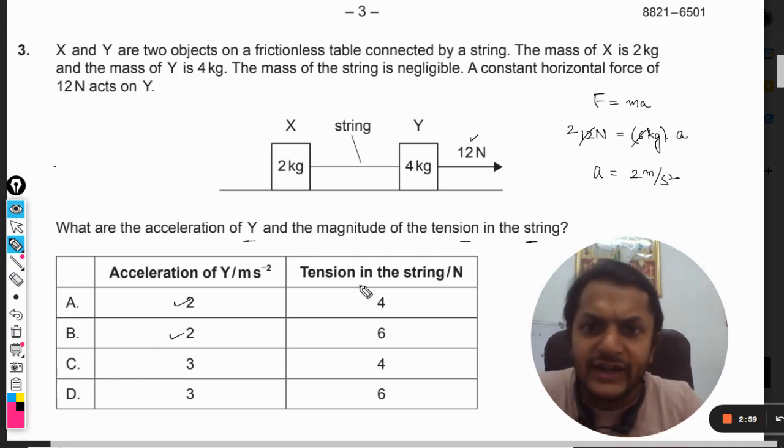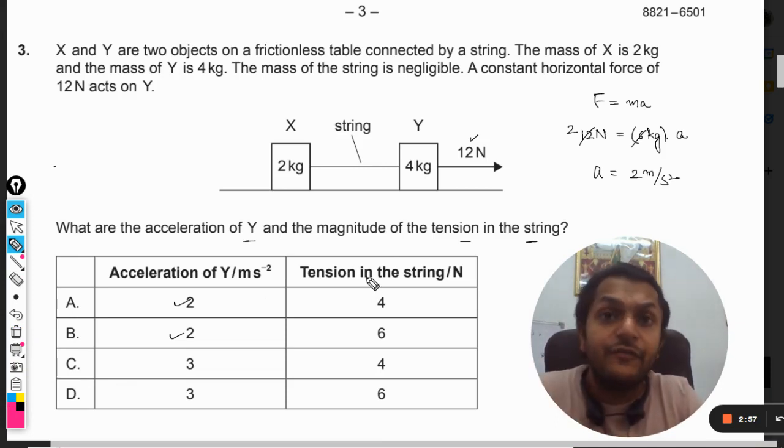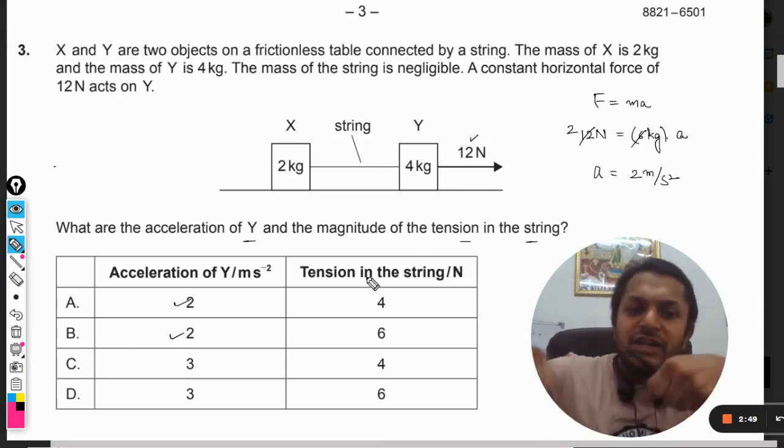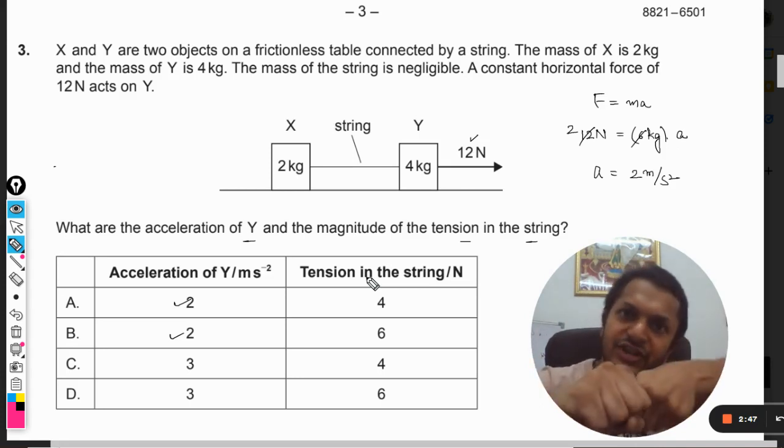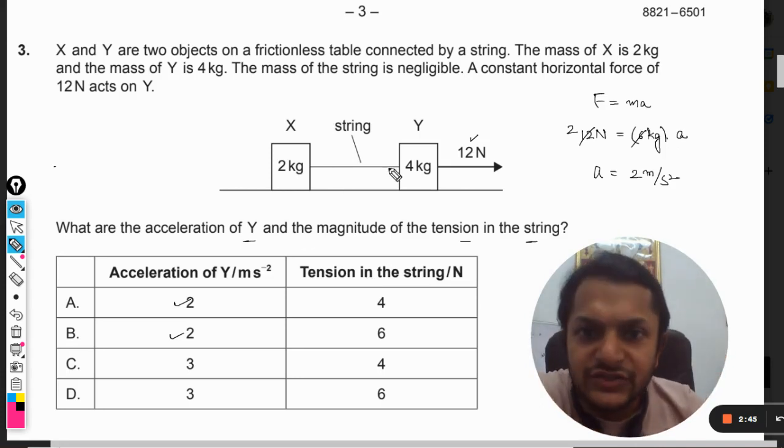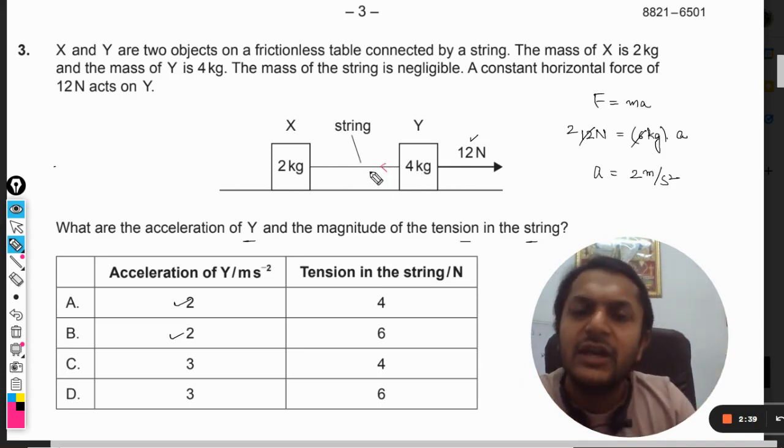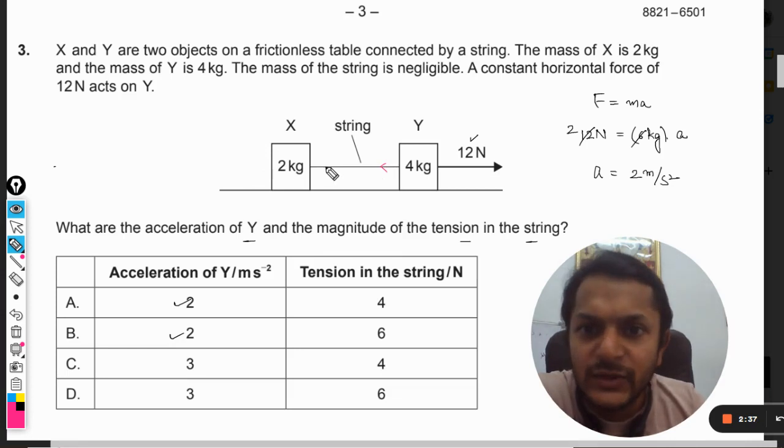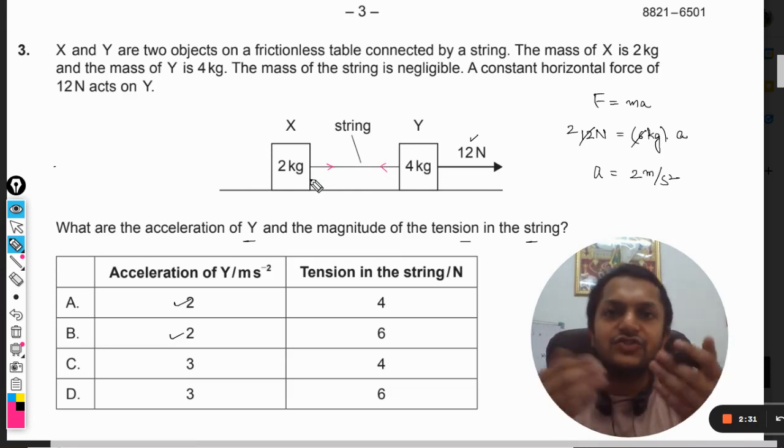Now what about the tension in the string? This is part number two of the question. We want to find tension. First of all we must know what is the tension and how do we show the tension in the diagram. Tension is the force with which the string is pulled. The string is pulled like this, so the string is getting pulled.